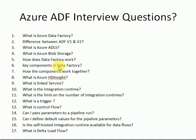You also need to explain the key components and architecture of Azure Data Factory. The four key components are: pipelines, datasets, activities, and linked services. You need to explain the relationship between all four of these components. When explaining them, give a basic example of processing data from source to target.